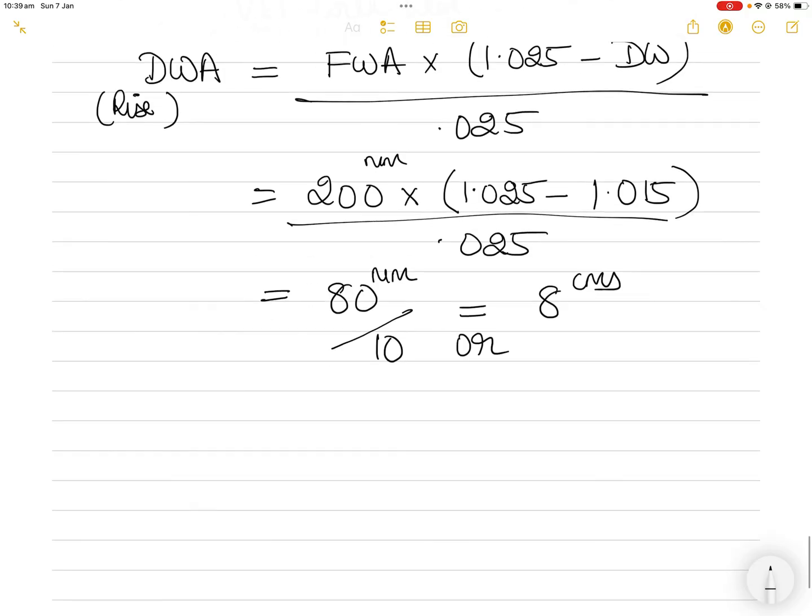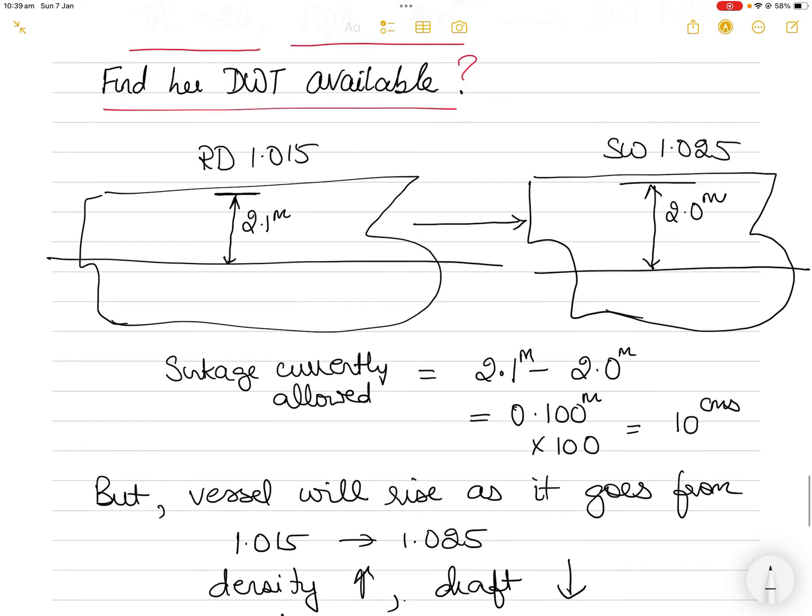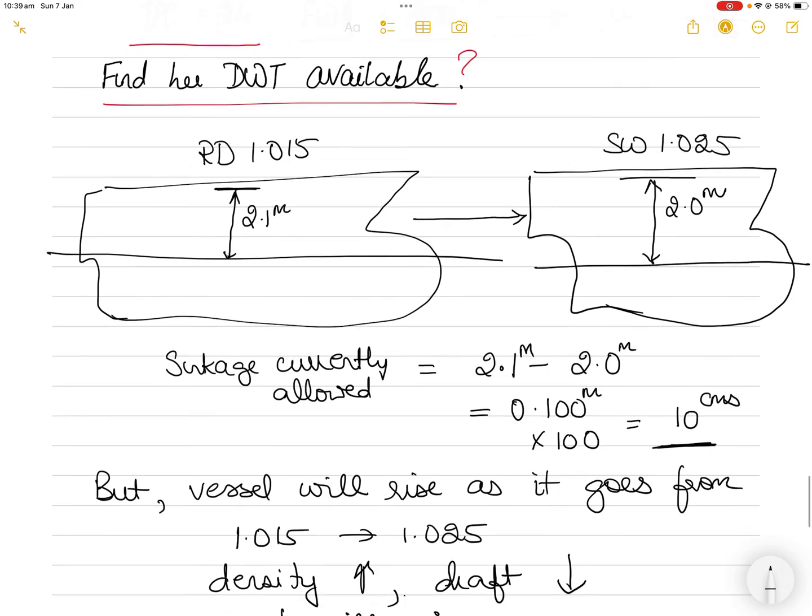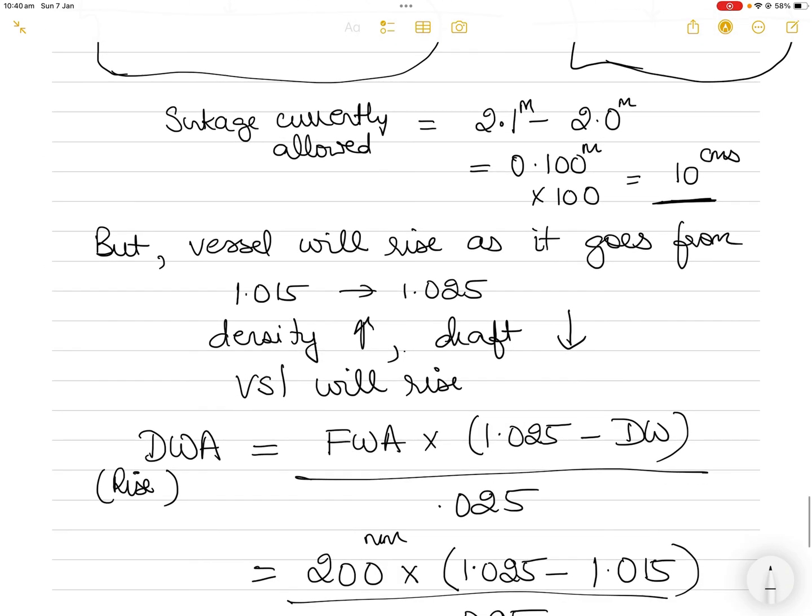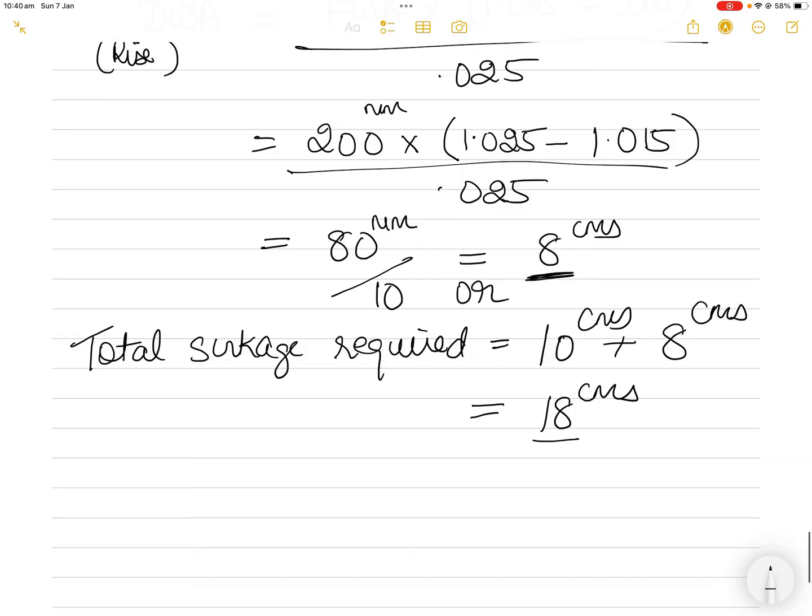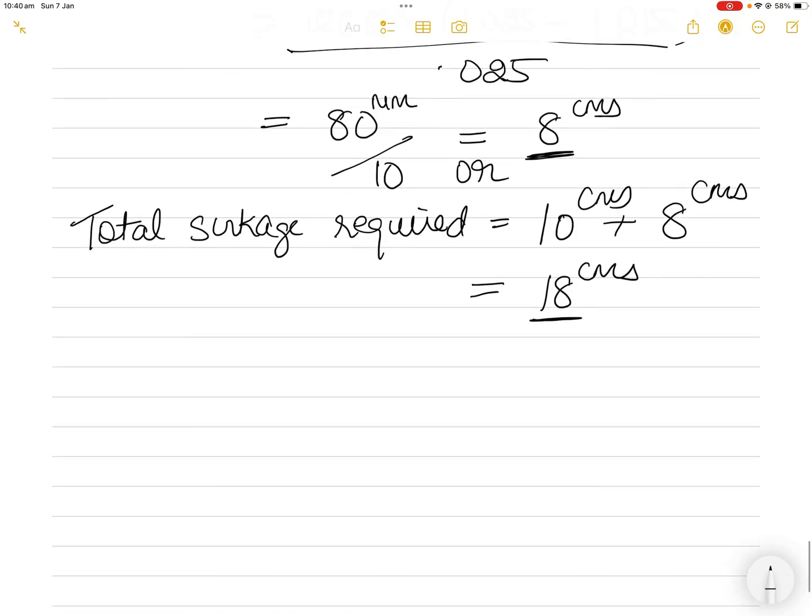Total sinkage required is the previous sinkage of 10 centimeters plus the rise due to density change of 8 centimeters, giving 18 centimeters total. Currently the vessel has a freeboard of 2.1 meters to be reduced to 2 meters, giving 10 cm allowance. Then the vessel will rise 8 cm due to density change, so total sinkage required is 18 centimeters.